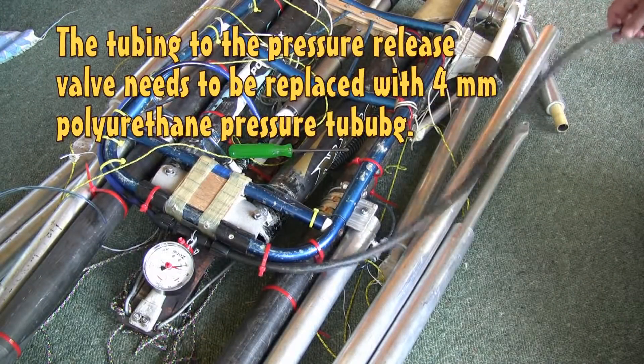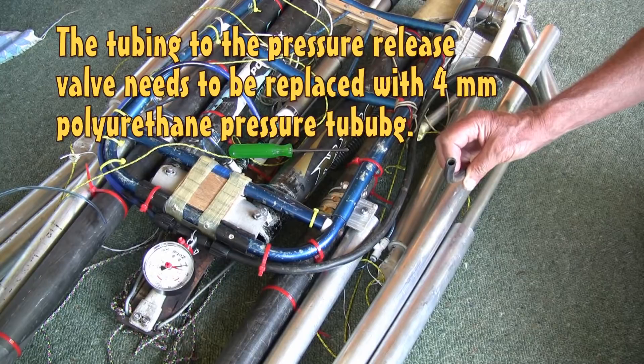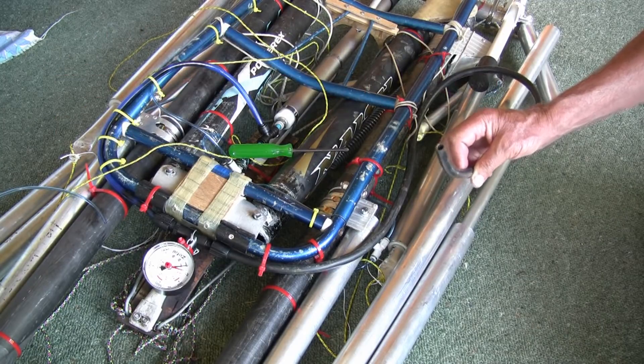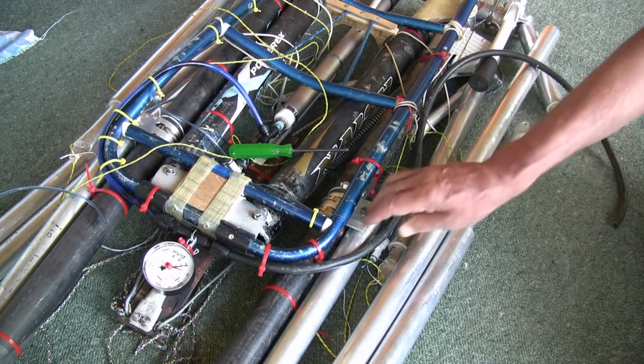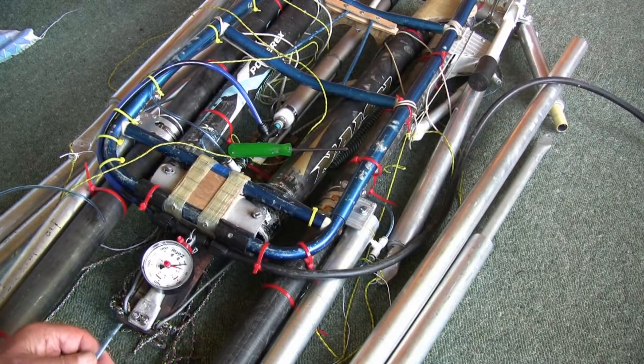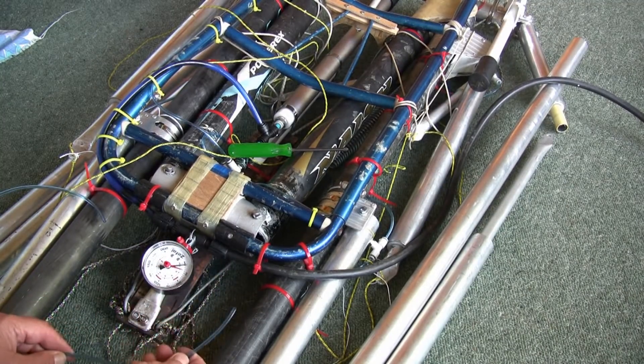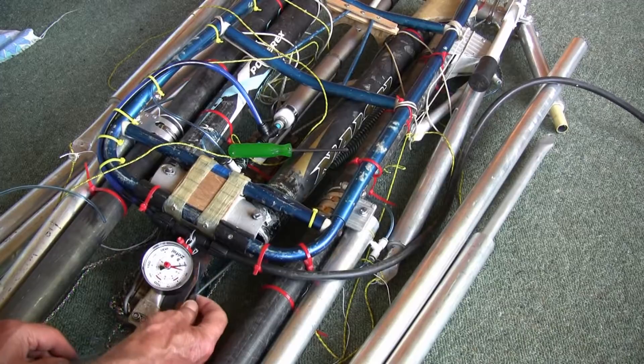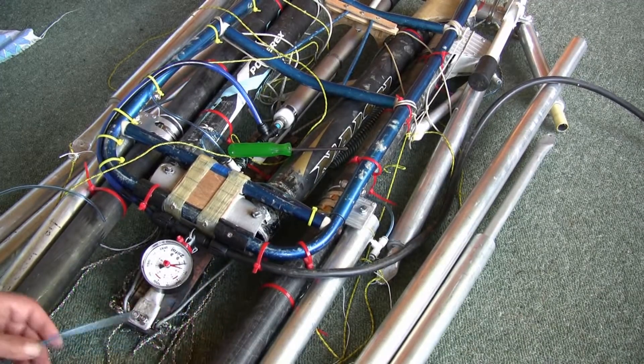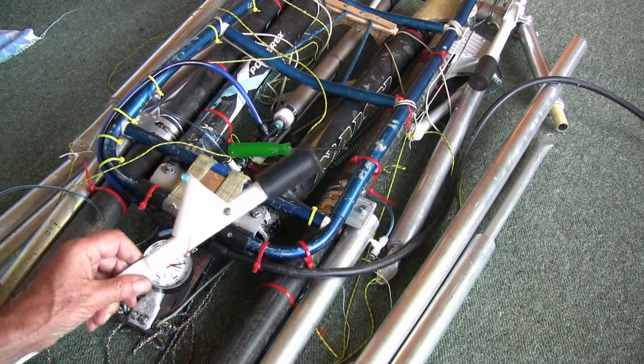I'm releasing this hose which connected the old pressure release valve which is connected back to the pump. I have to find a way to adapt this connection to this four millimeter tube here that connects to the new pressure release valve.